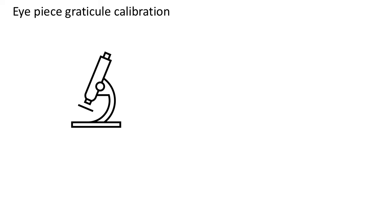An eyepiece graticule is used to allow someone observing a sample on a microscope to be able to find out the size of anything they are looking at. In order to use that graticule, it must be calibrated against a micrometer that is present on the slide.